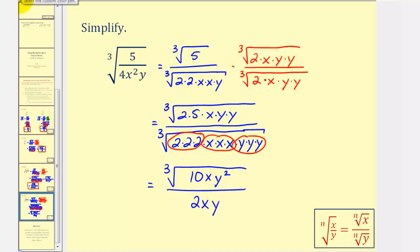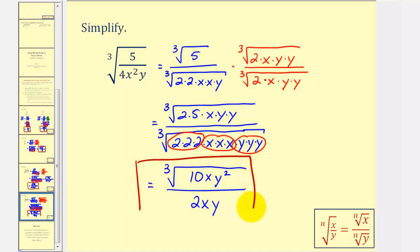And we never have to worry about the absolute value if the index is odd. I hope you found these examples helpful.